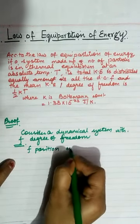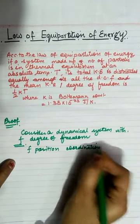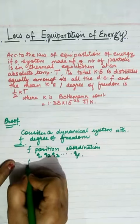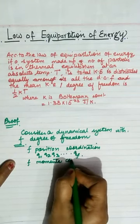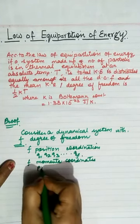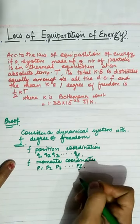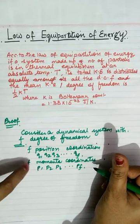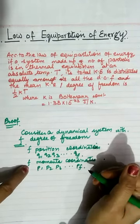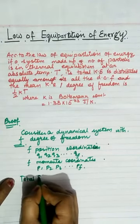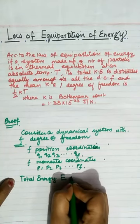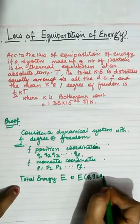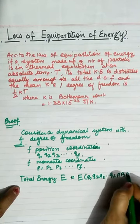We have F position coordinates Q1, Q2, Q3, up to Qf, and F momentum coordinates P1, P2, P3, up to Pf, to express the position and momentum of the system. When we have F position coordinates and F momentum coordinates, the total energy E is written as a function of all position and momentum coordinates: E = E(Q1, Q2, Q3, ..., Qf, P1, P2, P3, ..., Pf).